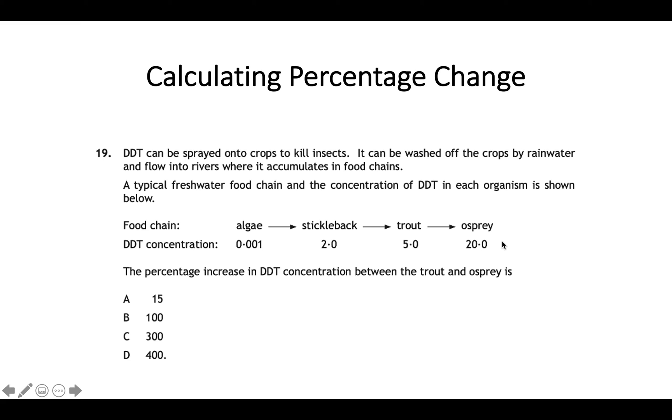So ignore these values at the start here. We are only focusing on the trout and the osprey. So in this case it's not like they've gave you the results from the experiment, they're asking to just focus on these two numbers. So the initial or the original value was 5 and then we can see there's been an increase to this final value in the osprey of 20. So again if you try and use those steps from before, if you want to pause the video now and then I'll go through how you work out this question.